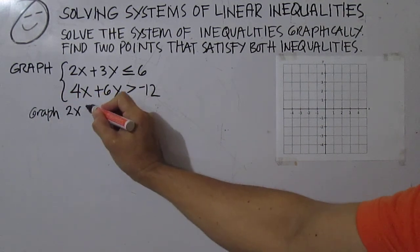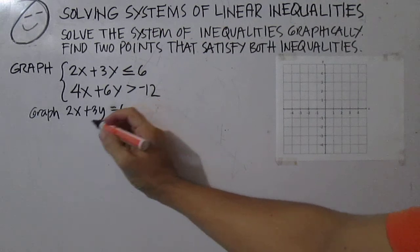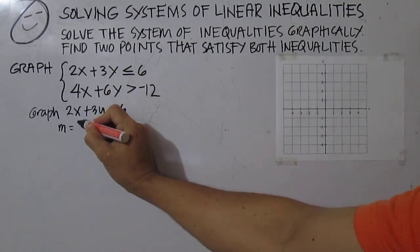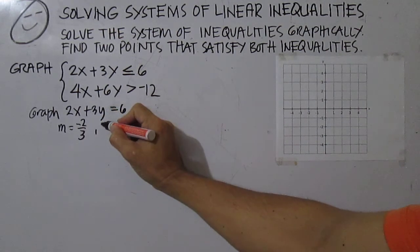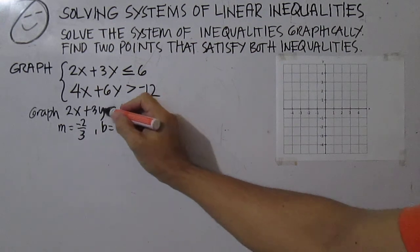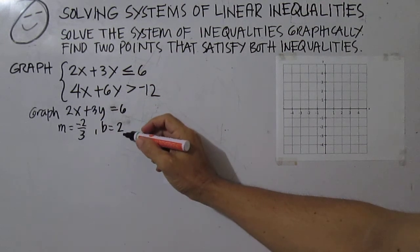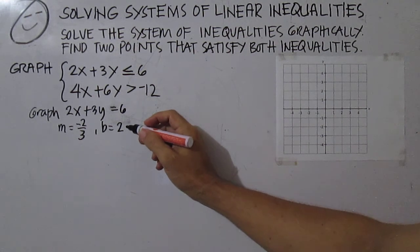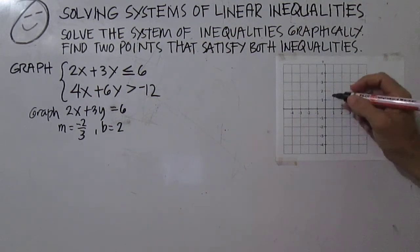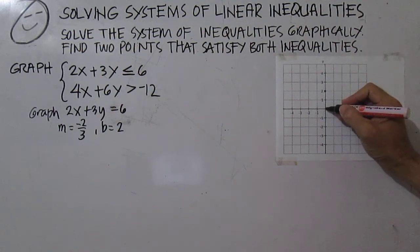Graph 2x plus 3y equals 6. This is in standard form. The slope is the opposite of a over b, and the y-intercept is c over b. 6 divided by 3 is 2. Then plot the point of the y-intercept — b equals 2 — draw a dot. From the y-intercept, move two units down and three units to the right.